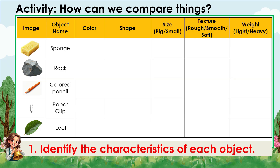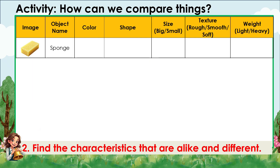Let's dive in. For the sponge: the color is yellow, the shape is rectangular, the size is medium, the texture is soft and a bit rough, and it is very lightweight.